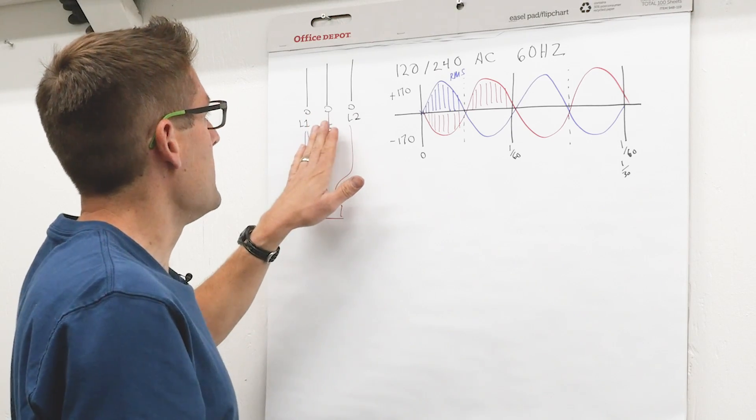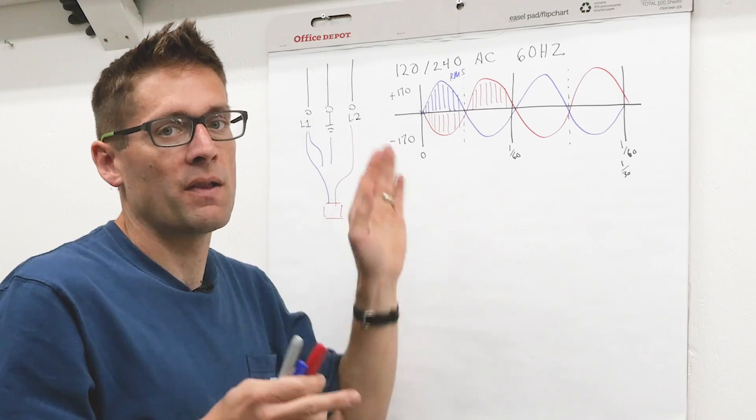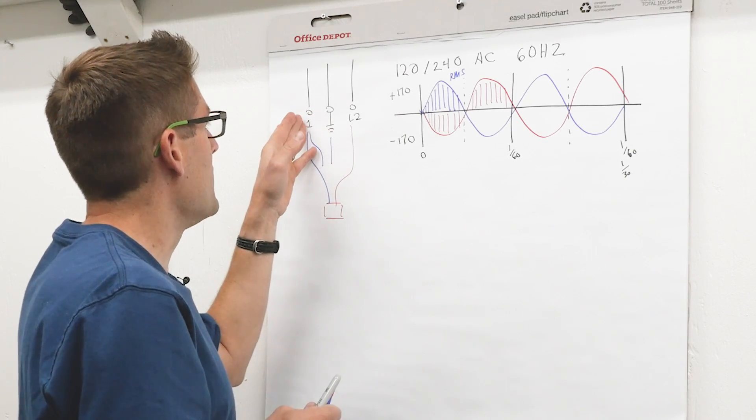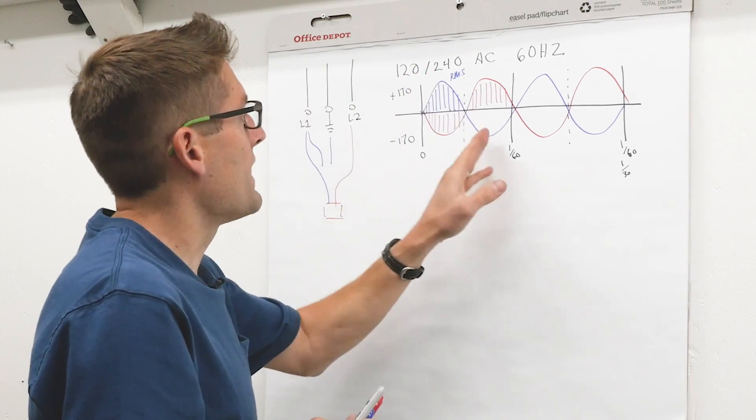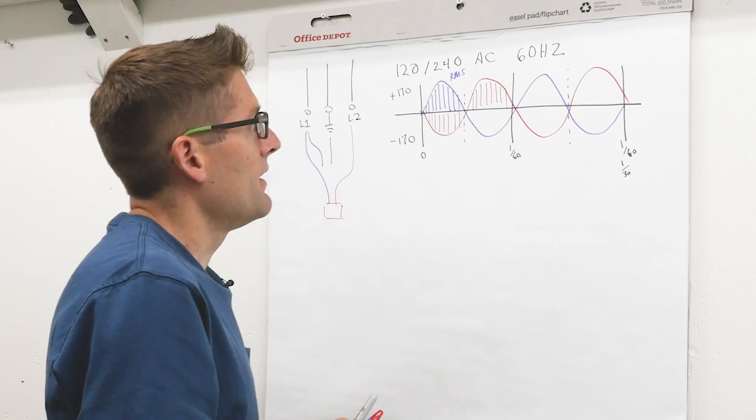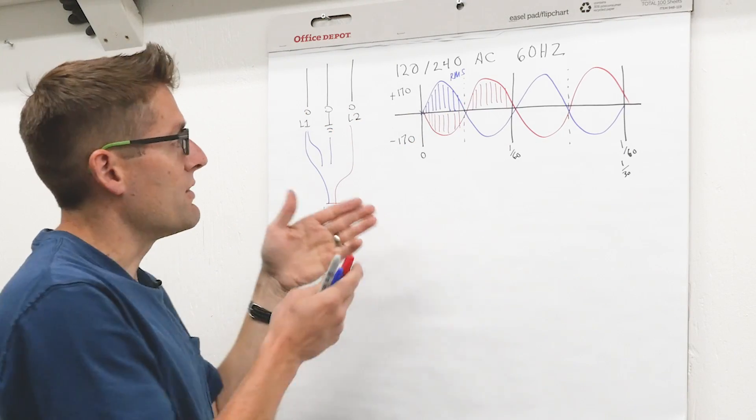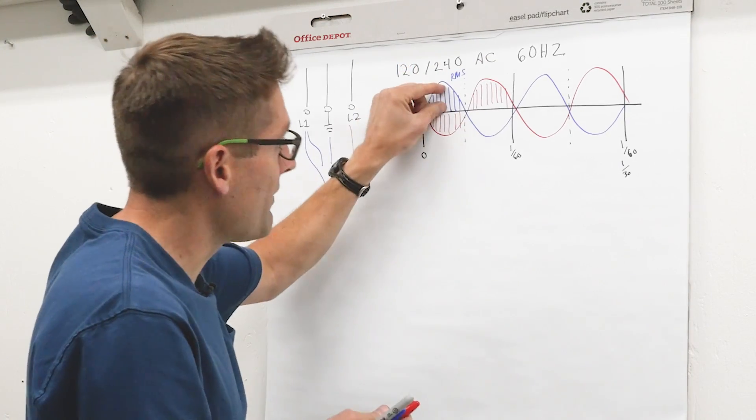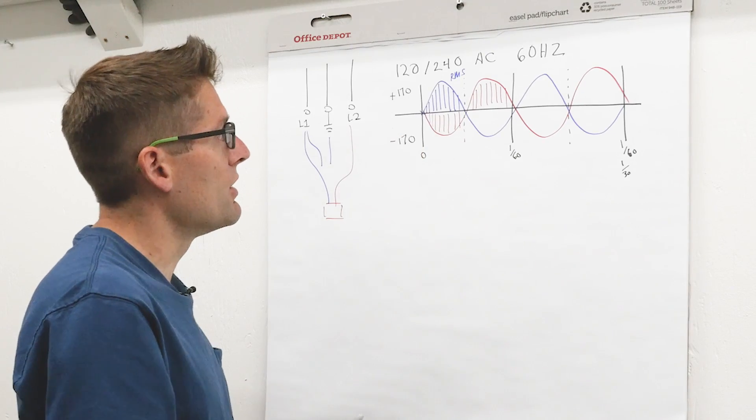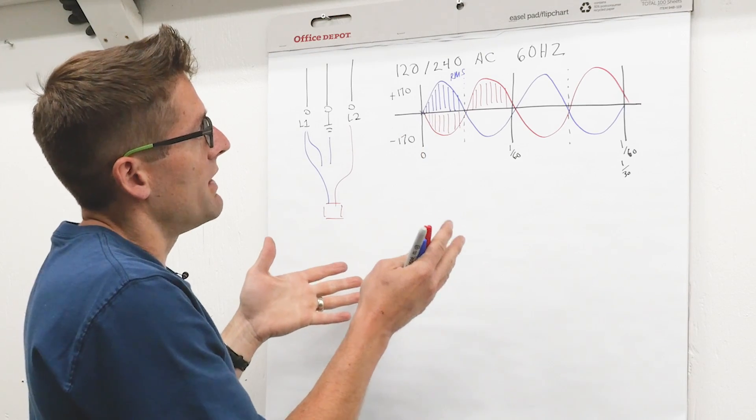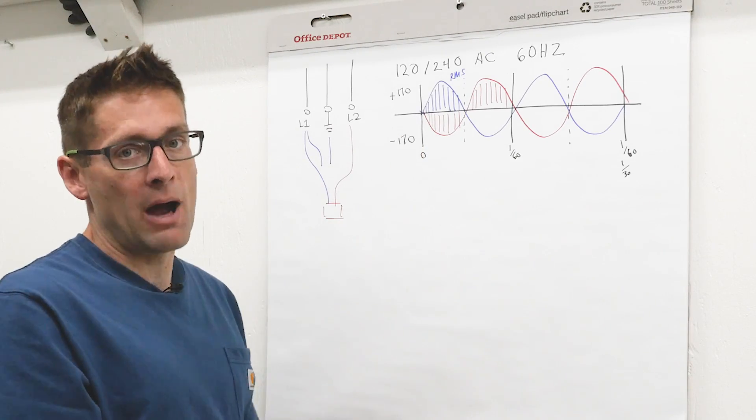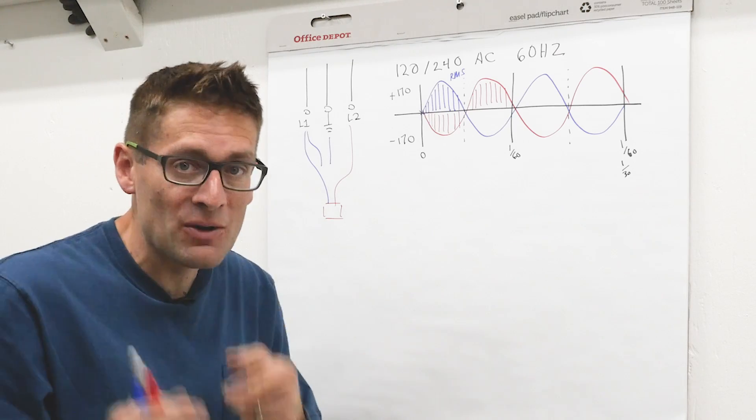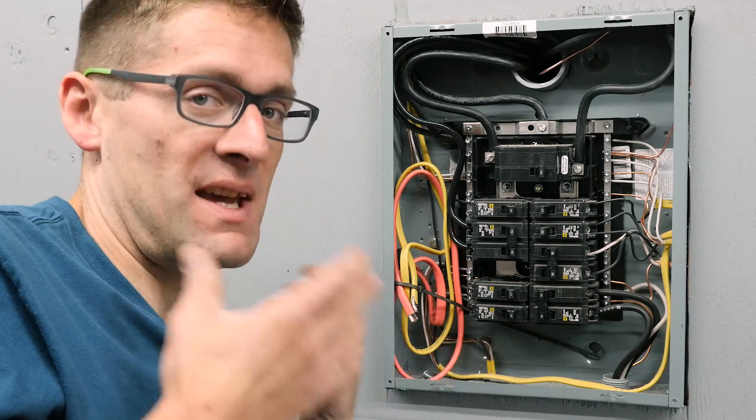So if you understand that the neutral is like ground but is slightly different and does not have potential, L1 alternates plus 170 negative 170, L2 is the opposite, the RMS power averages out to 240 volts for 240 single phase or half of that 120 if we're just going to the neutral. This will kind of let you understand what you need to know about power for single phase in a shop. Let's go over the electrical panel and I'll show you what that actually looks like and this is where things get practical.